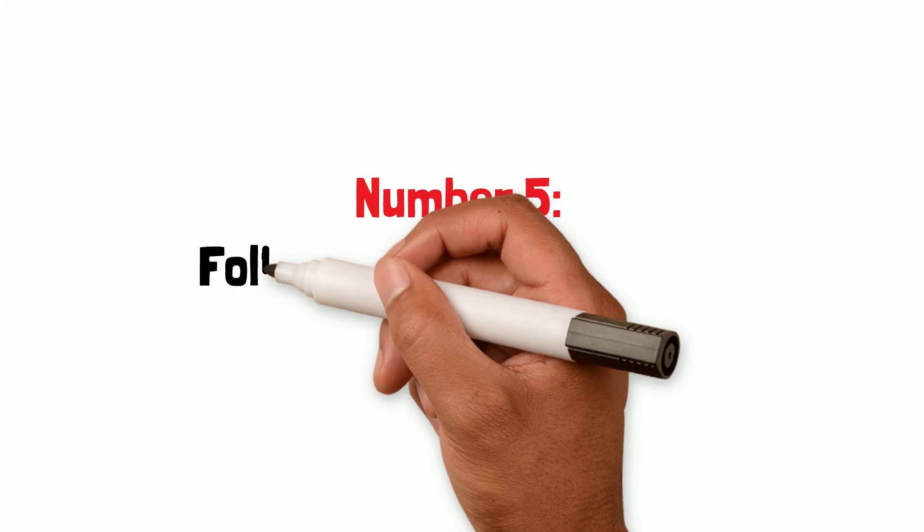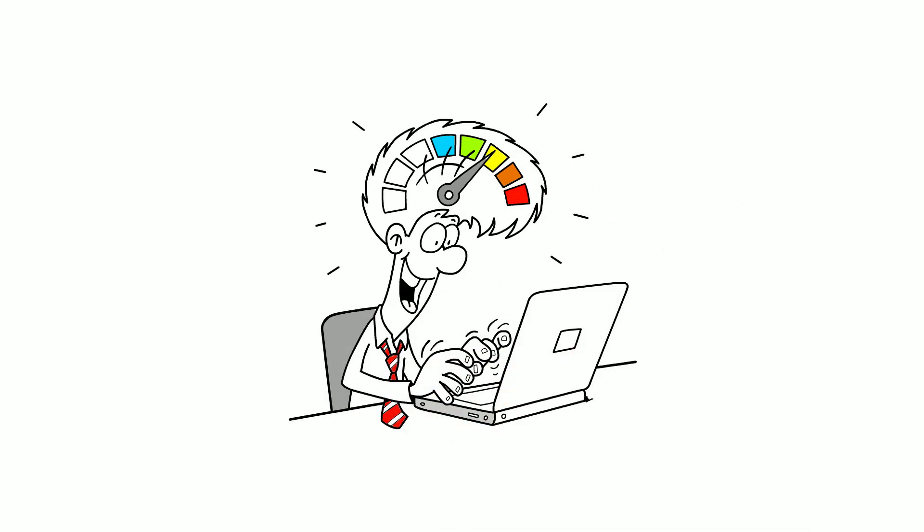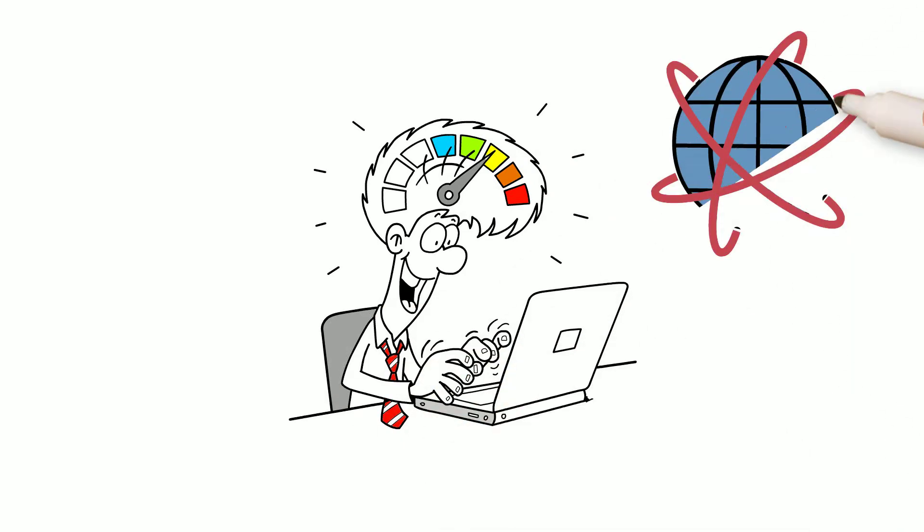Number five: follow a written goal and stay on track. If our brains are working at a million miles an hour, so is the world around us.